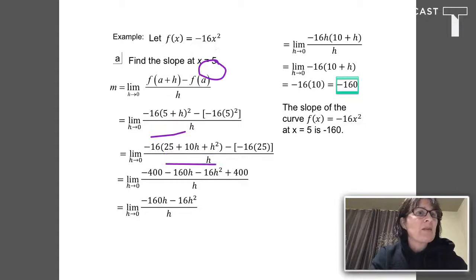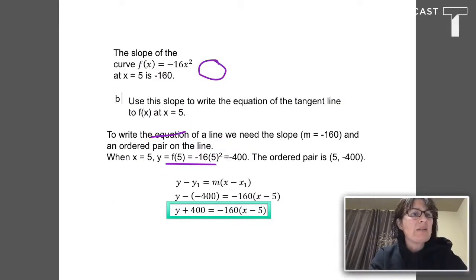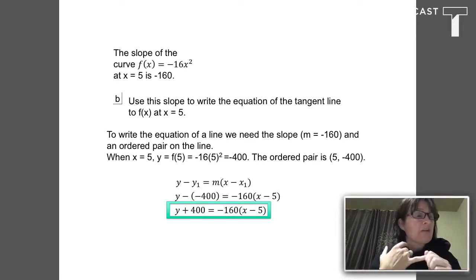My next job is to write the equation for the tangent line. What do I need to write the equation of a line? I need the slope, which I just figured out was negative 160, and I need an ordered pair. I know the X that was given, X is going to equal 5. I need the Y that goes with that X.